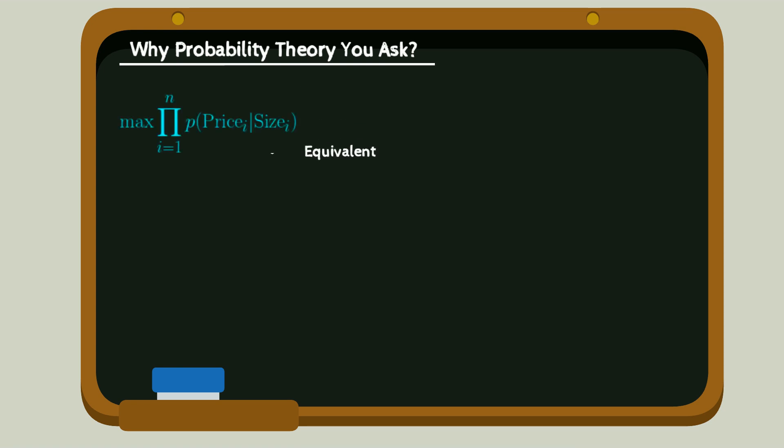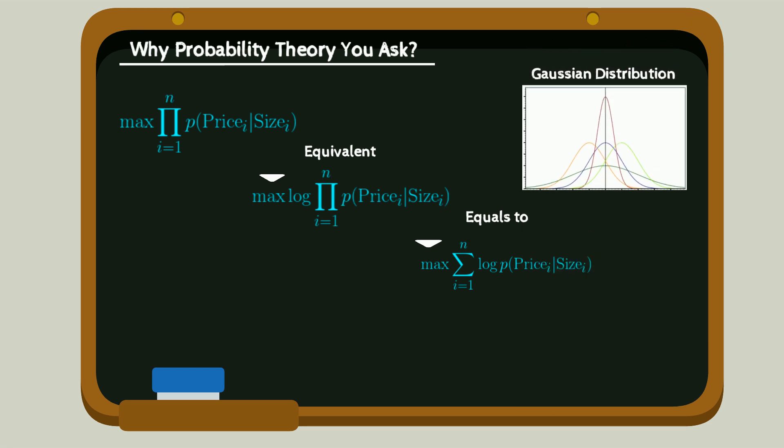Here, we need to maximize the product or maximize log product. This gives us max summation i equals 1 to n log of p of price i, given size i. Choosing Gaussian density for epsilon, we can show that max likelihood is equivalent to sum of squares. That's why second power makes sense.